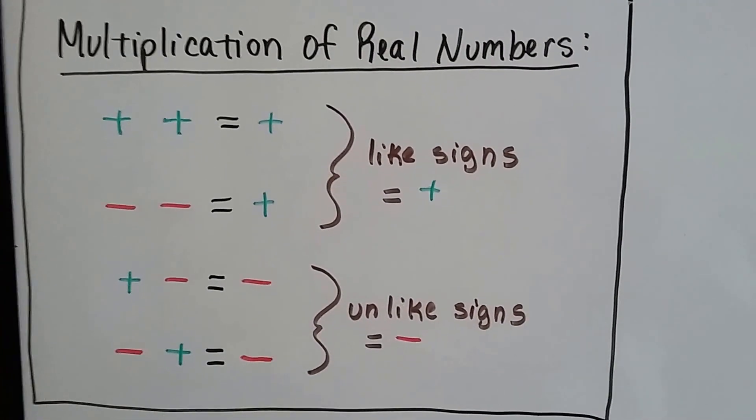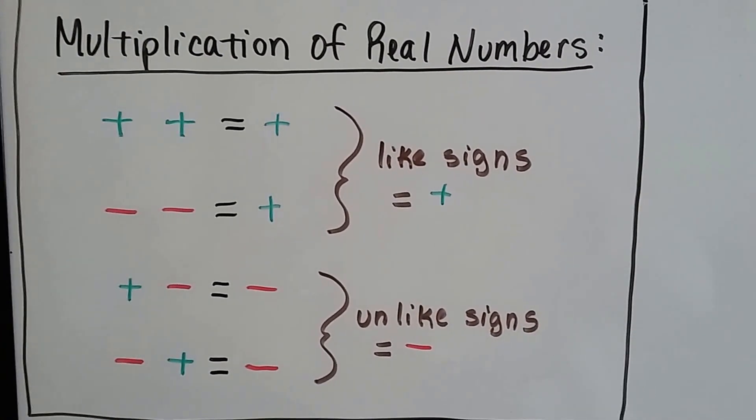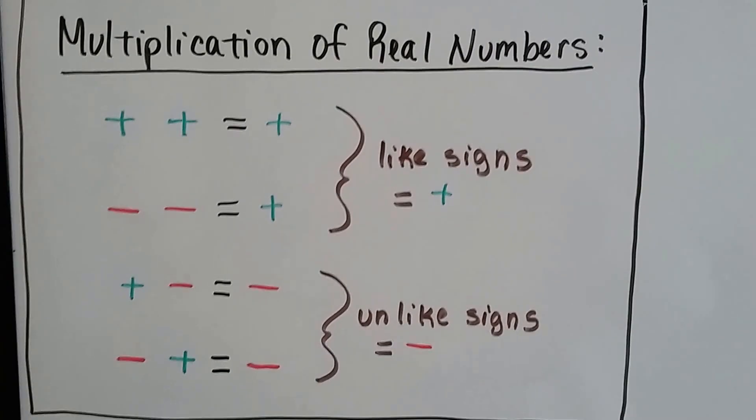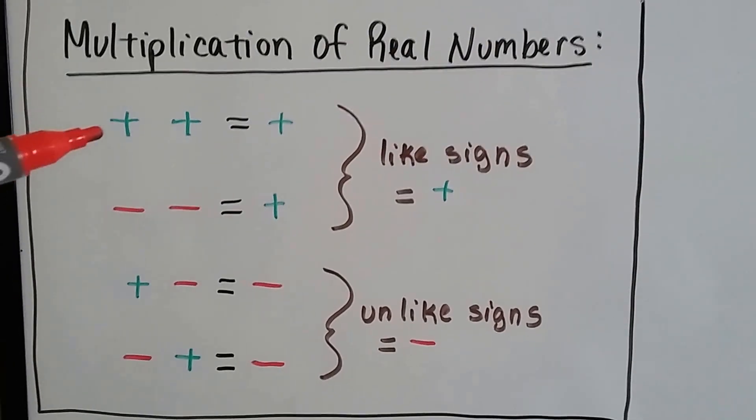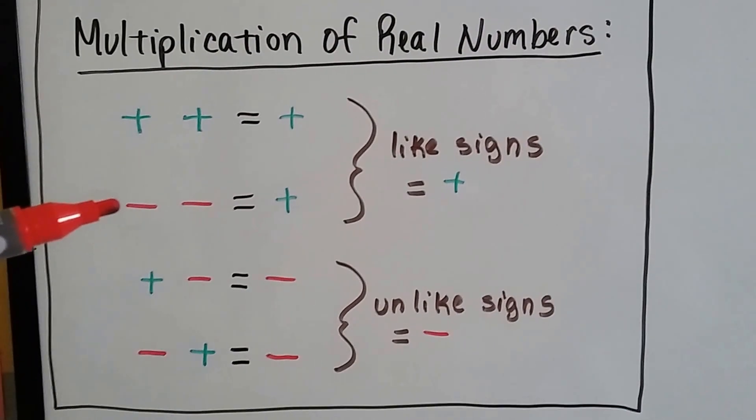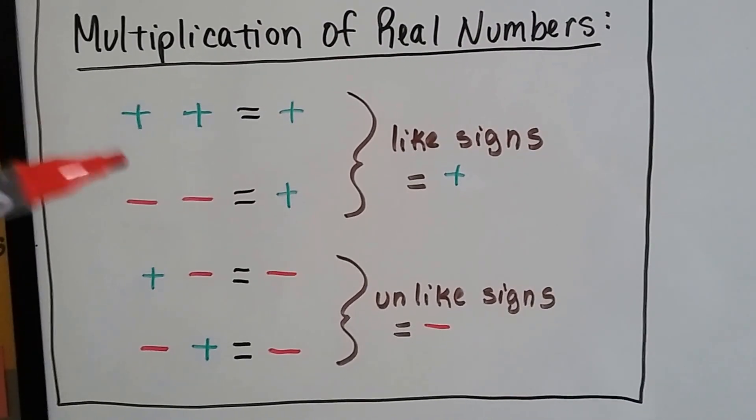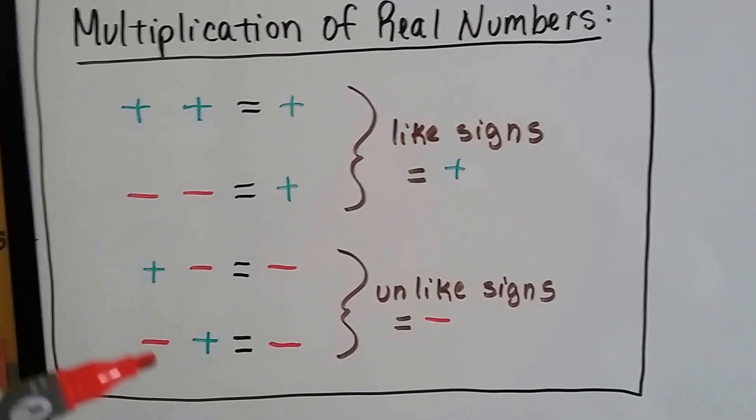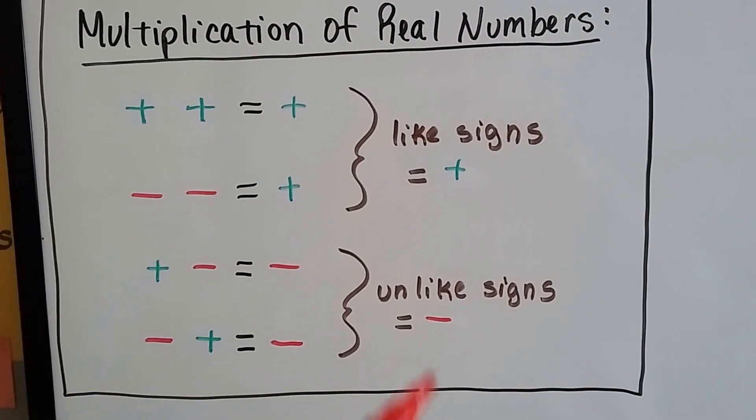Here's a table that'll tell you what happens when we multiply with positives and negatives. If we're multiplying together two positives, our answer's positive. Two negatives, our answer's positive, because their signs are like. It's when their signs are unlike that the answer is a negative.